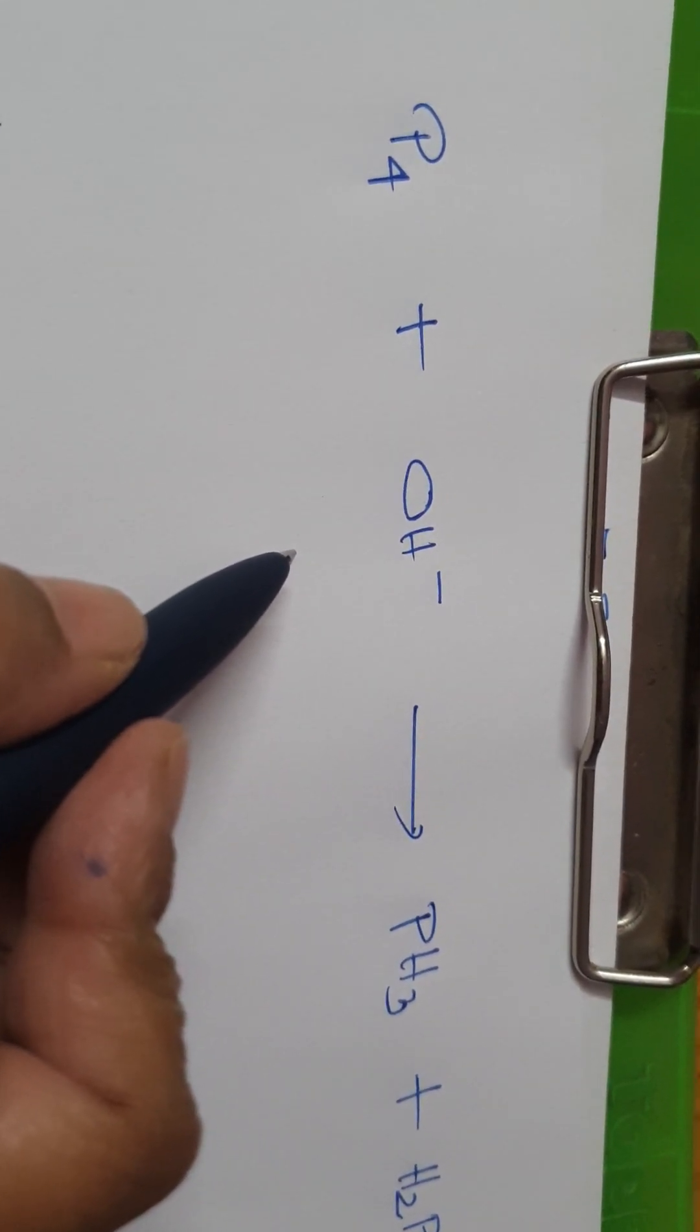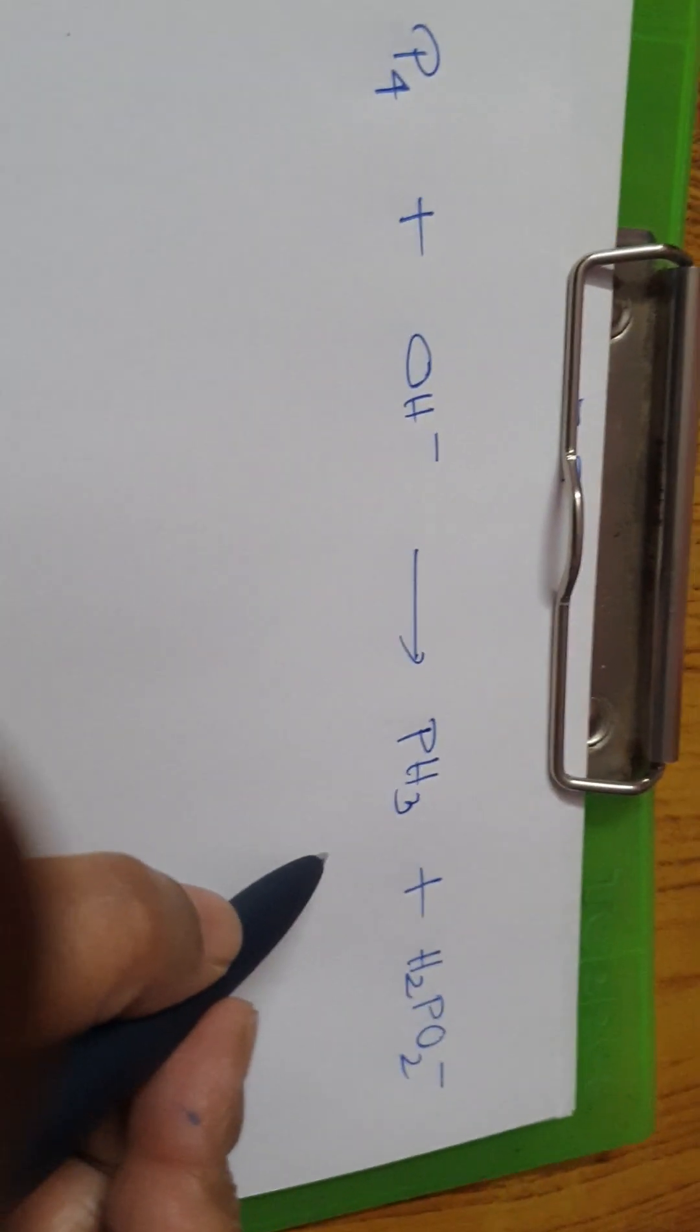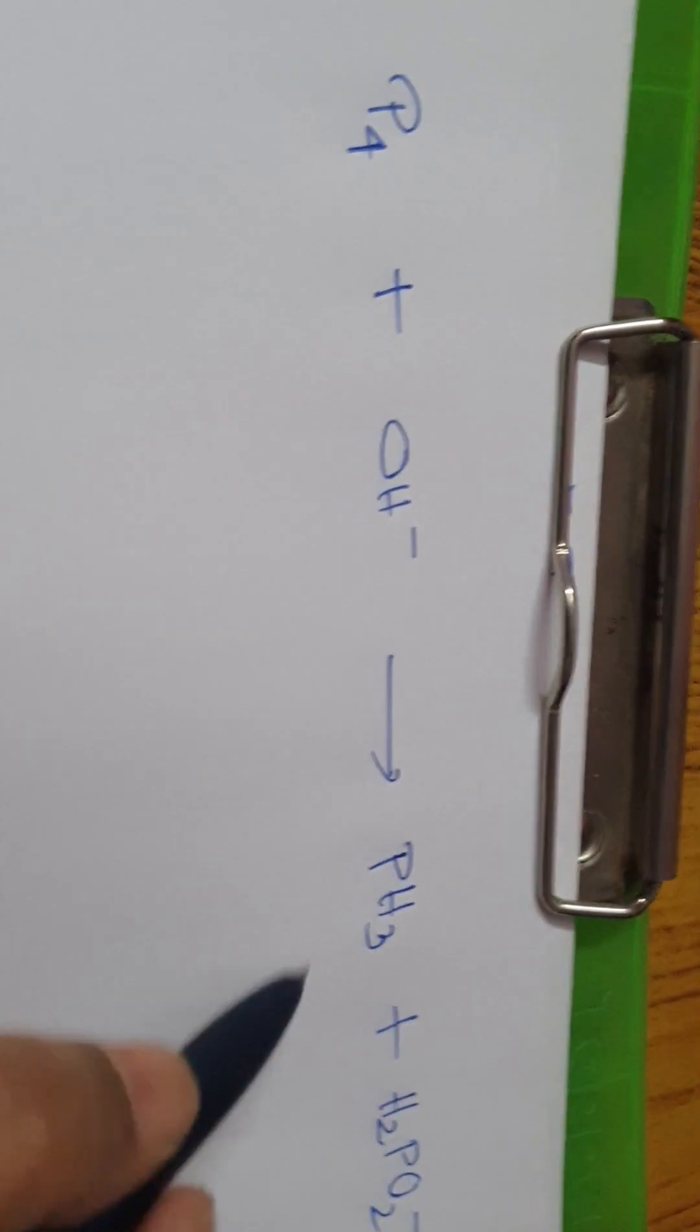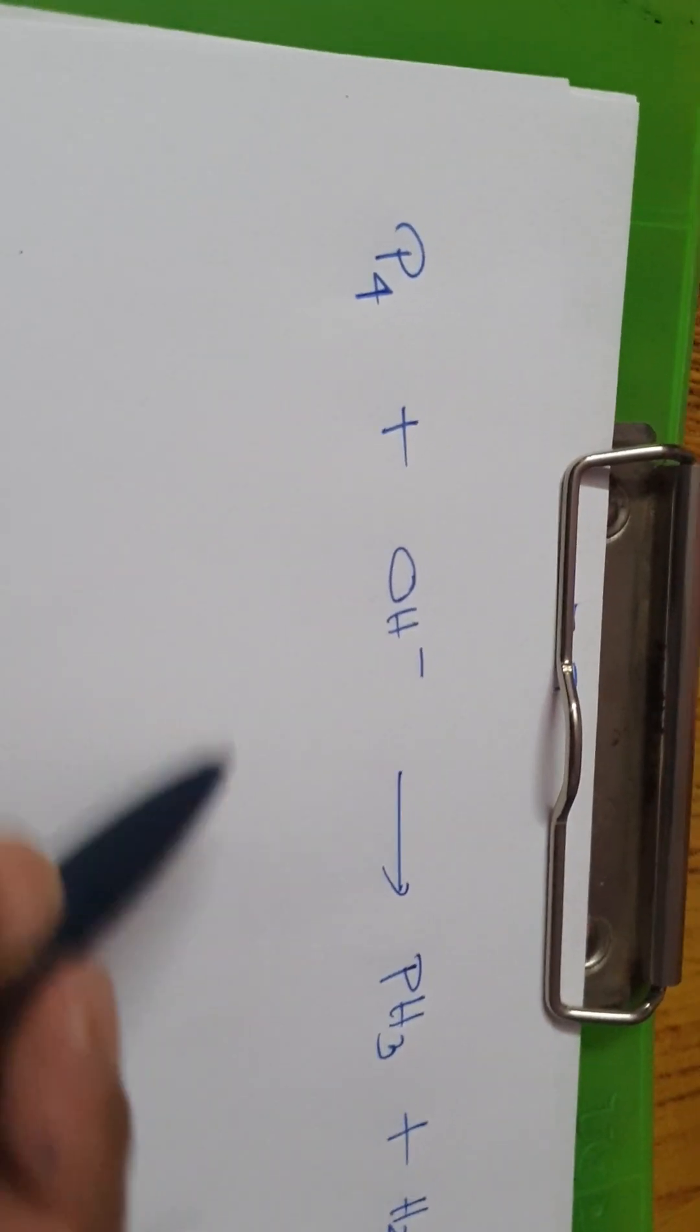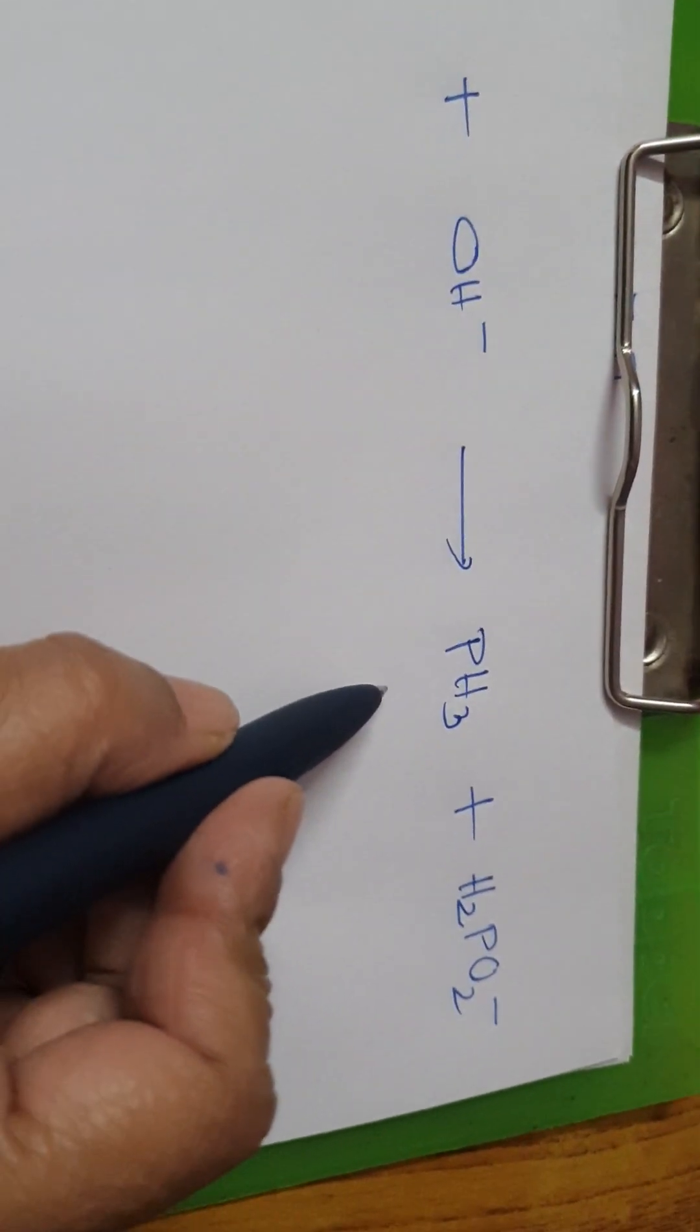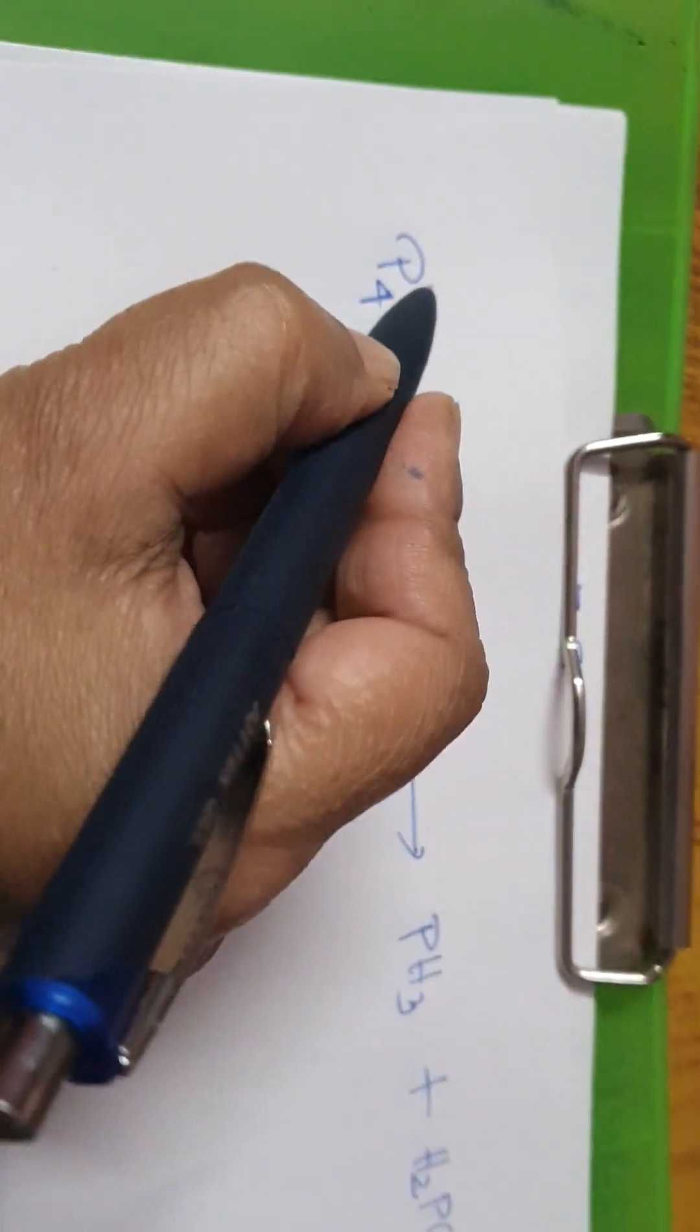Now, today we discuss about the redox reaction balancing by oxidation number method. This is my reaction: P4 plus OH minus gives phosphine PH3 plus H2PO2 minus. What is the oxidation number of P4 here? Now, 0.